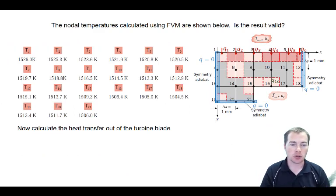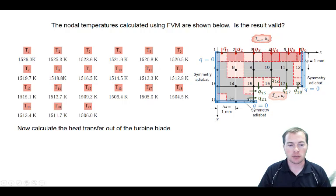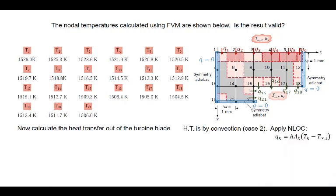Now we calculate the heat transfer out of the turbine blade. The heat transfer out is across the surfaces coincident with the cooling channel — across the volume associated with node 21 and across the two faces associated with volumes T15, 16, 17, and 18. Heat transfer is by convection, so we apply Newton's law of cooling. To get positive values for heat transfer out, the temperature difference is written with the nodal temperature first and the fluid temperature second, since energy transfers from the higher to the lower temperature. We simply add up all the heat transfer across the faces.